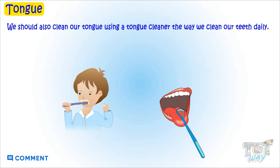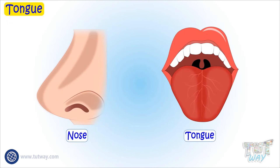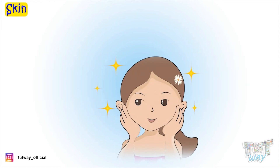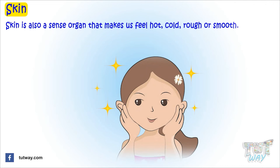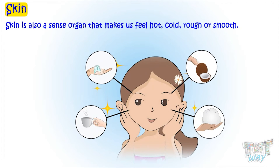So kids, we have learned about our nose and tongue. Now we will learn about another sense organ, which is our skin. Our skin is another sense organ that makes us feel anything hot, cold, rough, or smooth.